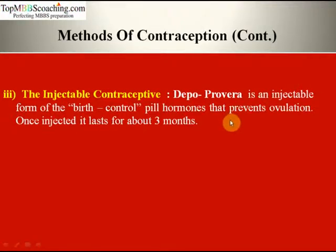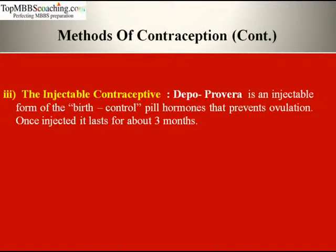Next is injectable contraceptives. Depo Provera is an injectable form of birth control hormones that prevents ovulation, and once injected it lasts for 3 months. It is a convenient and relatively safe method that also helps in regulating the size of fibroids. However, some studies on animals have linked this contraceptive with cancer.